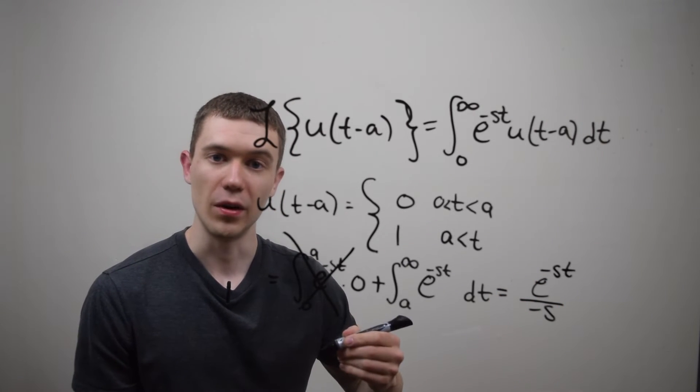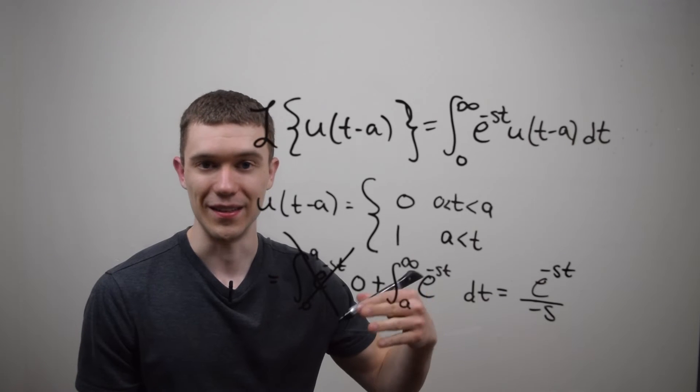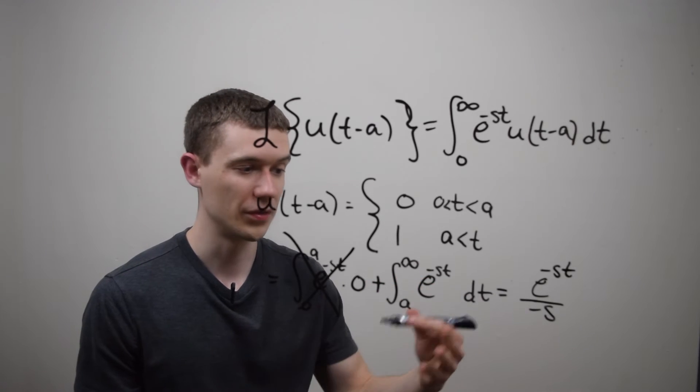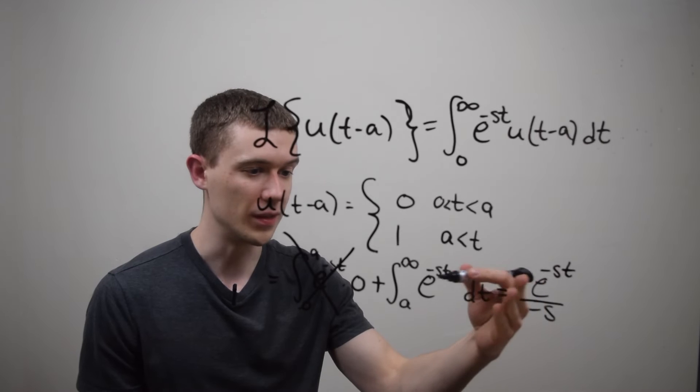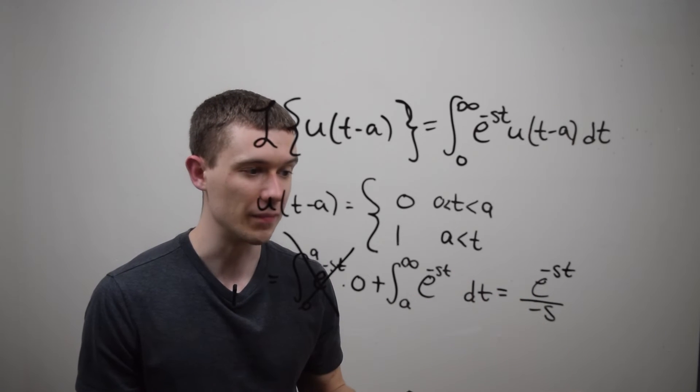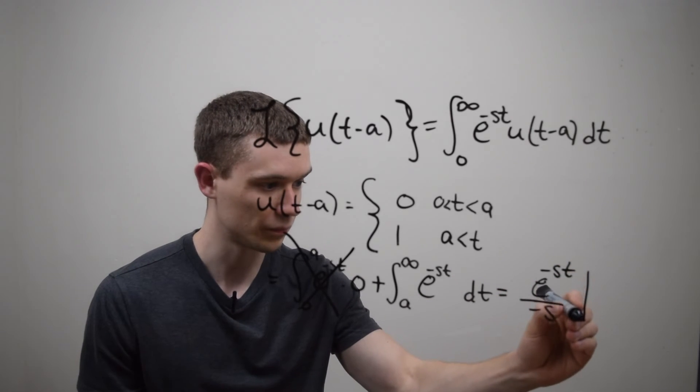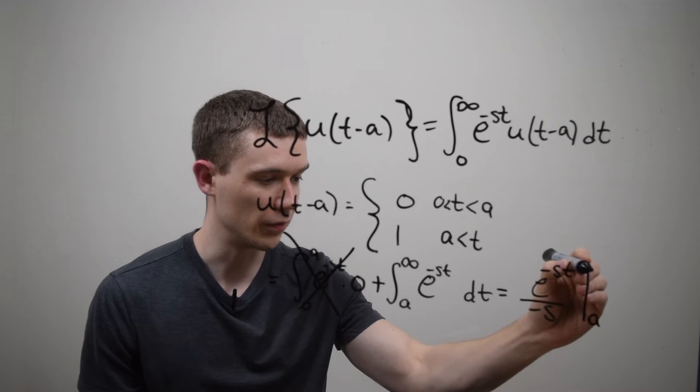If I integrate e to the 2x, it's e to the 2x over 2. So you can just remember that when I'm integrating things like this, I just need to divide by that constant. And I need to evaluate from a to infinity.